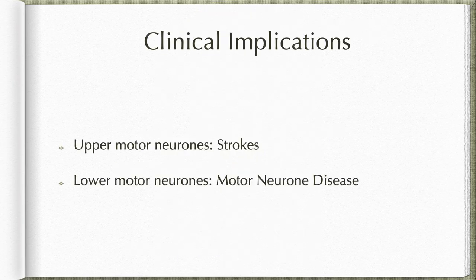Upper motor neurons are commonly involved in stroke, whereas lower motor neurons are more commonly involved in diseases like motor neuron disease, diabetes, or any other disease causing peripheral neuropathy.